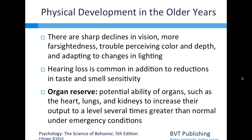Physical development in older years includes sharp declines in vision—more farsightedness, trouble perceiving color and depth, and difficulty adapting to changes in lighting. Hearing loss is common, in addition to reductions in taste and smell sensitivity. Organ reserve—the potential ability of organs such as the heart, lungs, and kidneys to increase their output under emergency conditions—is reduced in older adults.